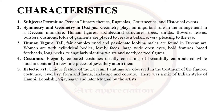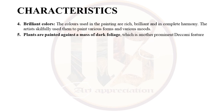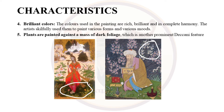Then comes brilliant colors. The colors used in the paintings are rich, brilliant and in complete harmony. The artists are very skillful in using them and paint various forms and moods with these colors. An interesting feature of the Deccani school is that plants are painted against a mass of dark foliage — a very prominent Deccanic feature. A dark mass of foliage in the background is used to highlight a few plants in the foreground.